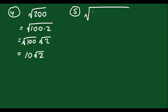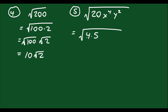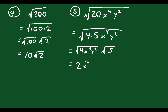Now let's try the square root of 20x⁴y². We apply the same concept — split the number so one part is a perfect square. For 20, use 4 times 5. So you can write this as the square root of 4x⁴y² times the square root of 5. Square root of 4 is 2, square root of x⁴ is x², and square root of y² is y. The 5 can't be square rooted, so it stays under the radical. The simplified form is 2x²y√5.